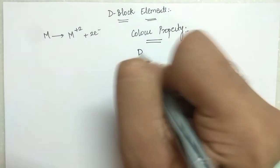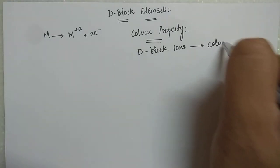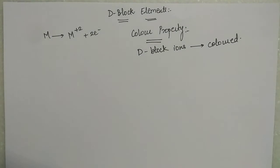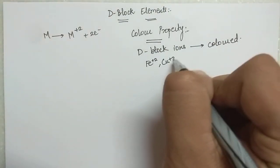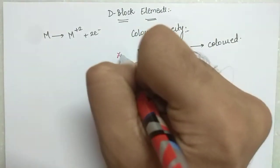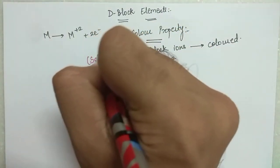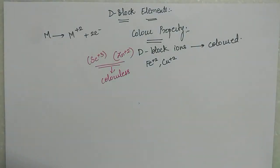Almost all d-block ions are colored. This is a property of d-block ions. If you look at s-block ions like Na⁺, K⁺, Mg²⁺, Ca²⁺, these are all white. But d-block ions like Fe²⁺, Cu²⁺ — these have color. There are two exceptions within d-block ions: Zn²⁺ is colorless, and Sc³⁺ is also colorless. But all other d-block ions are colored.